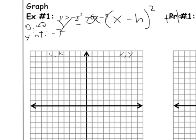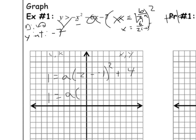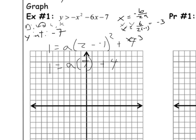What else do we know? Well, we could find the vertex — we could find the axis of symmetry by saying x equals negative b over 2a. So x equals positive 6 over 2 times negative 1. 6 divided by negative 2 is negative 3. So we've got an axis of symmetry at x equals negative 3.